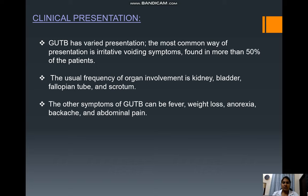Genitourinary tuberculosis has varied presentation. The most common presentation is irritative voiding symptoms, found in more than 50% of patients. The usual frequency of organ involvement is kidney, bladder, fallopian tube, and scrotum. Other symptoms include fever, weight loss, anorexia, backache, and abdominal pain.